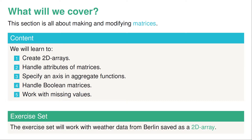In the exercise set for this section we are going to work with weather data from Berlin, saved as a 2D array, so you'll have the opportunity to practice what you've learned. I'm really excited to start working with matrices, so let's keep going.